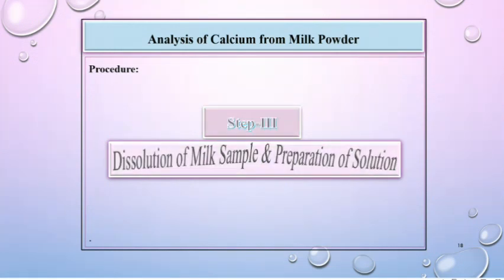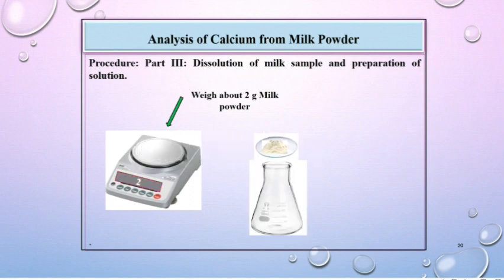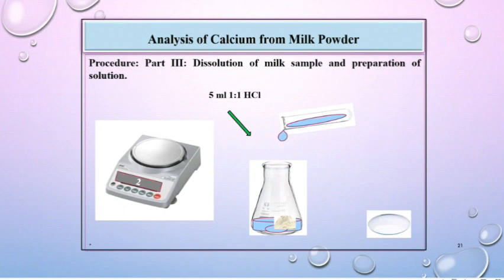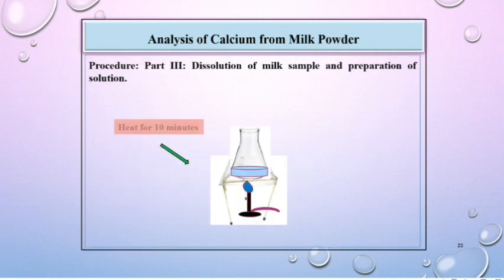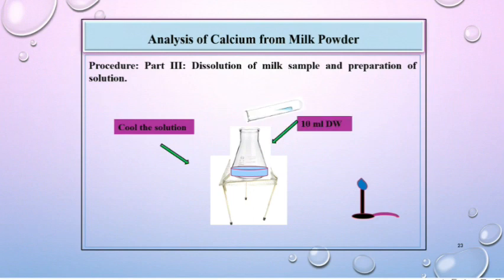Step 3 is dissolution of milk sample and preparation of solution. For that, weigh about 2 g of milk powder, then transfer this milk powder into a conical flask. Wash the watch glass with a minimum amount of 1:1 HCl and complete the volume up to 5 ml. Stir it well. Now heat this solution for about 10 minutes, then cool the solution well and add 10 ml distilled water to this solution.